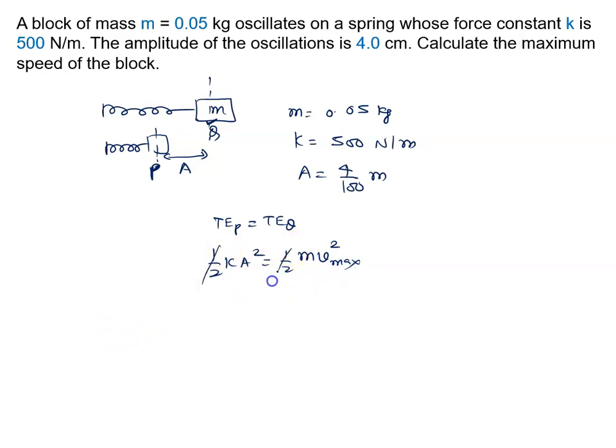Now let's calculate v max. V max is given by root k A square upon m. Put the k value, that is root 500 into A square.